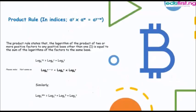Another rule we will look at is the product rule, which parallels the product rule in indices that says when multiplying numbers of the same base, their powers are added. Similarly, in logarithm, the product rule states that the logarithm of the product of two or more positive factors to a positive base other than 1 equals the sum of the logarithms of the factors to the same base. That is: log XY to base A equals log X to base A plus log Y to base A.